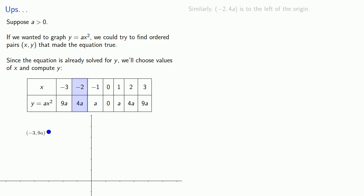By the same reasoning, minus two, four a is to the left of the origin and above the axis somewhere. But since four a is less than nine a, it's not as high up. So maybe we'll put it here. Similarly, minus one a is to the left of the origin, but not nearly as high as minus two, four a. So maybe it goes about here.